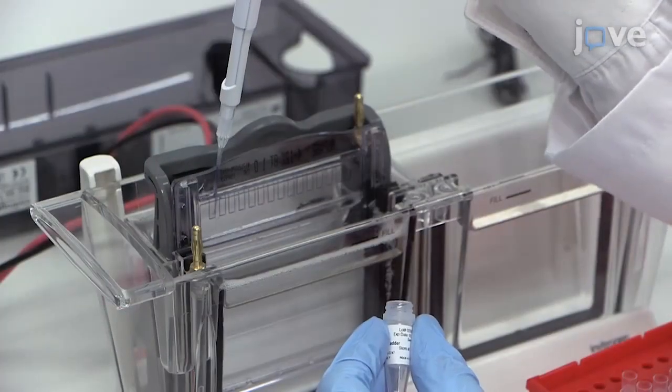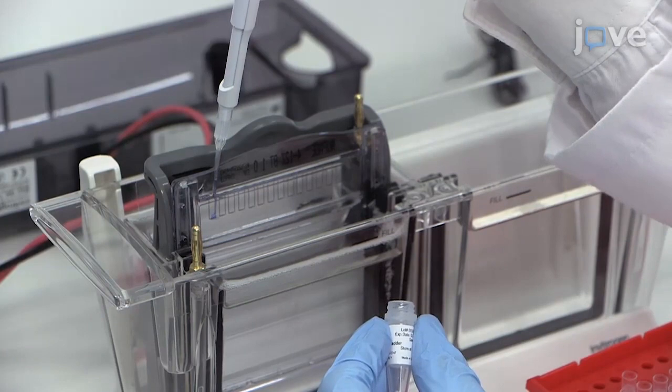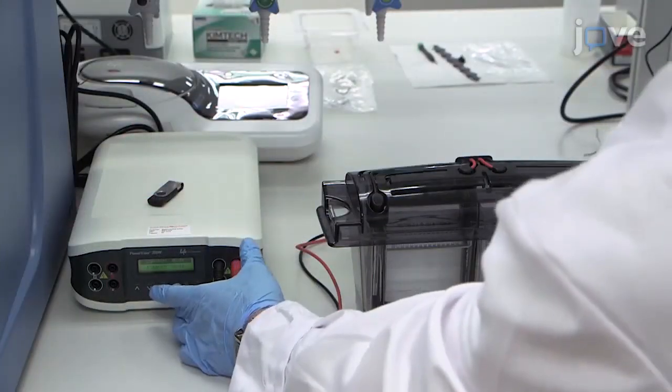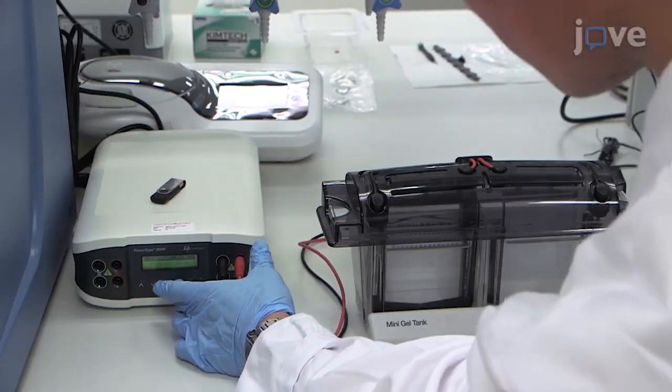Load the wells with the prepared protein sample. Then, run the gel at a constant voltage of 200 volts for 30 minutes.